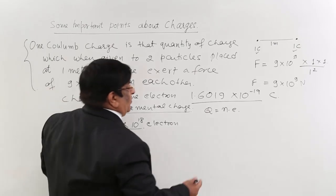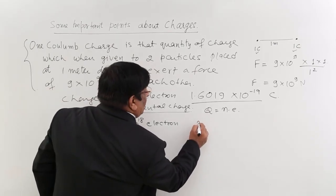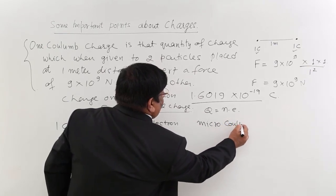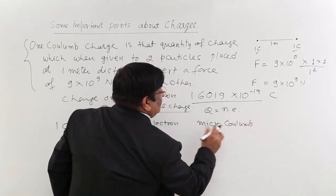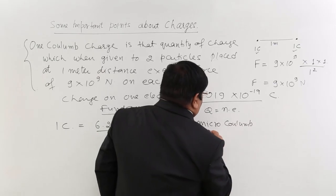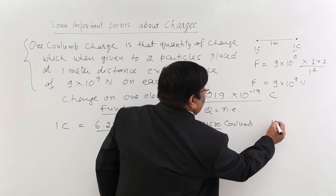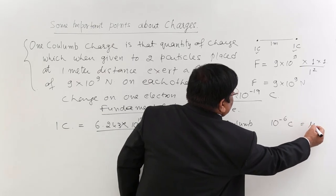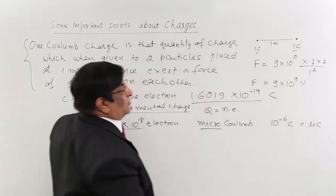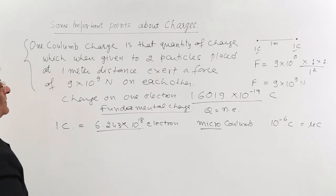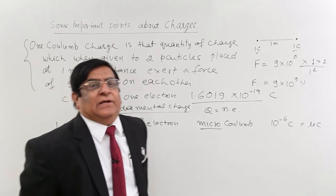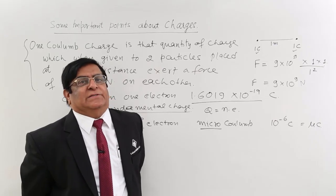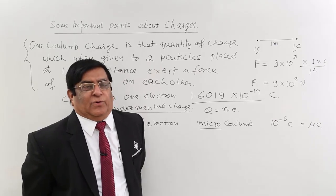Because coulomb is such a large quantity, we use a smaller unit called the micro coulomb, which is generally used in our laboratory. Micro means 10⁻⁶, and the notation for it is μ (mu). In physics measurements, we have 7 quantities taken as fundamental quantities.